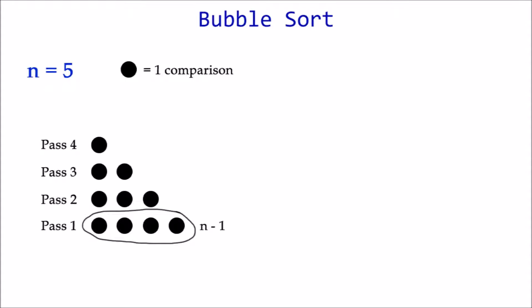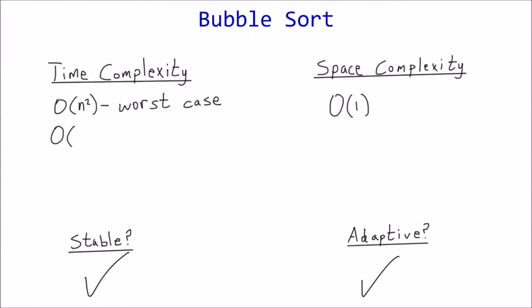But again, we only care about the highest order term, which is n. So best case is Big O of n.